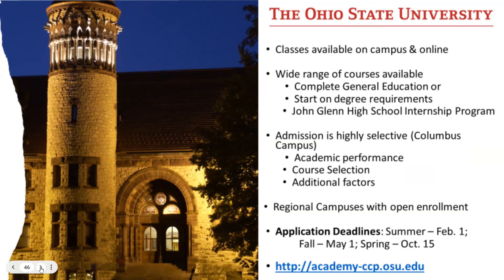For Ohio State, we provide CCP classes only on our campus or online. We do not have them available in the high schools. We offer a pretty wide range of courses that students can take. A lot of times students might start taking classes for our general education requirements or introductory courses for their future major. One special program we'd like to highlight is our John Glenn High School internship program that combines both an academic course and an internship experience for high school seniors interested in the field of public policy. We provide CCP on all of our campuses: the Columbus campus and our regional campuses in Lima, Marion, Mansfield, Newark, and the Agricultural Technical Institute in Wooster.